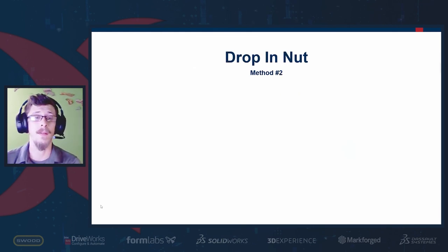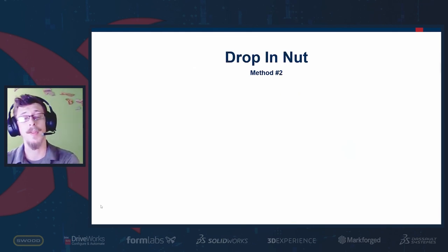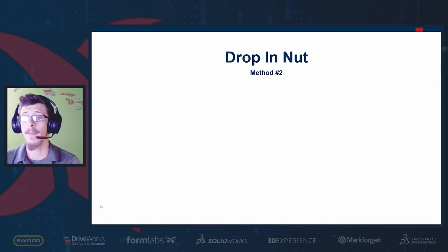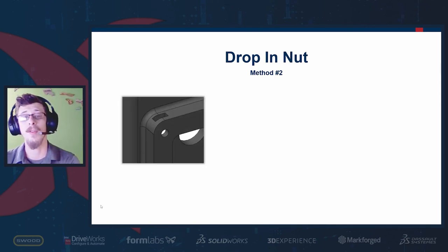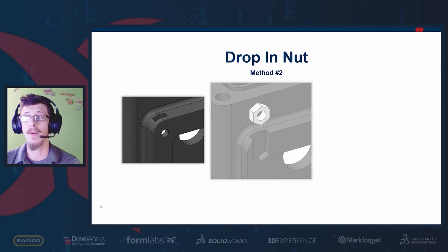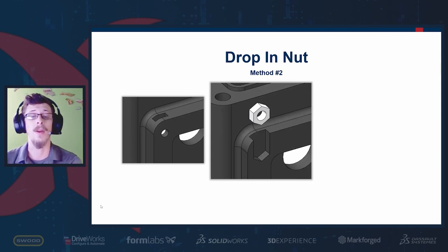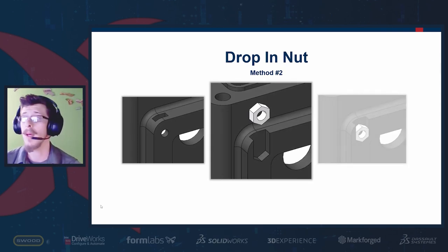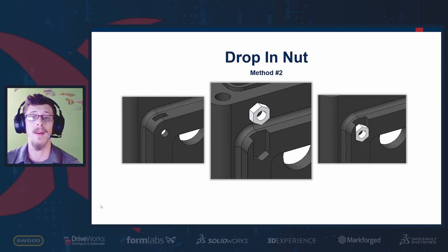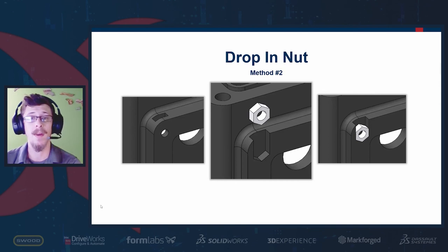Method two — dropping in a single standard hardware nut — is much easier than method one and does not require a bow tie or any pause function. Simply create a channel in the shape of a hexagon that you can drop the nut into, apply the fastener, and it's held in place. If you need to service the device, remove the fastener and shake the nut out.